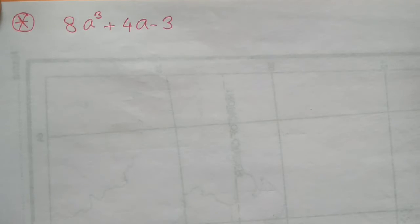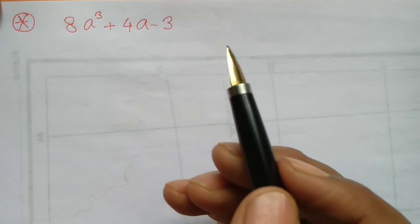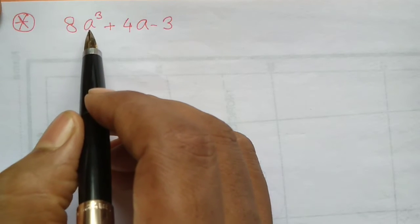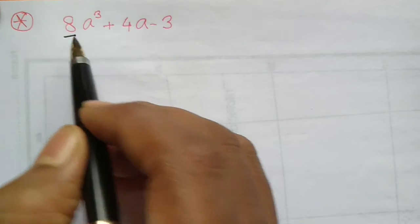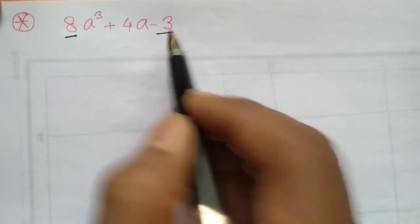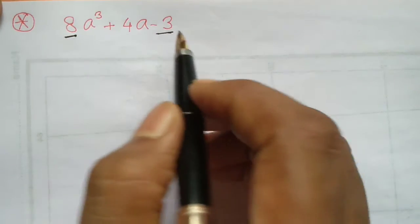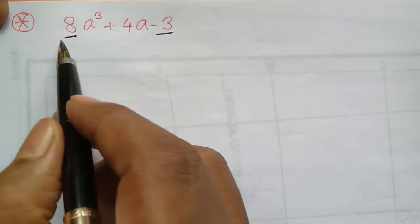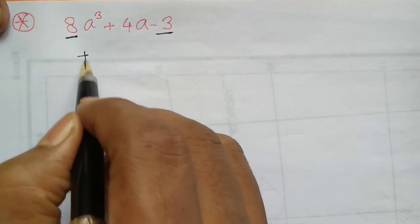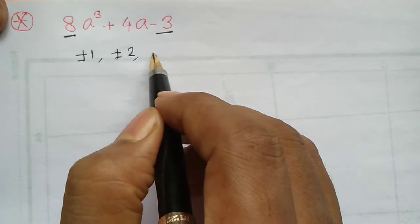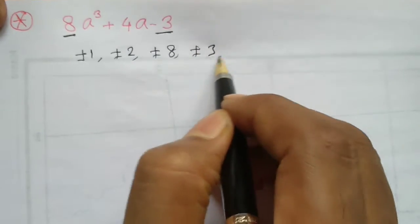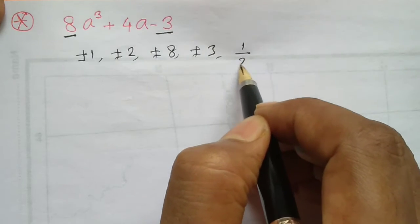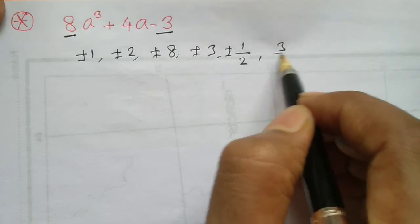With the help of the vanishing method, we factorize this polynomial. We note that the coefficient of the highest power of a is 8 and the constant term is 3. So the probable zeros of this polynomial are plus minus 1, plus minus 2, plus minus 8, plus minus 3, plus minus 1 by 2, and plus minus 3 by 2.